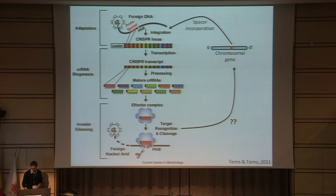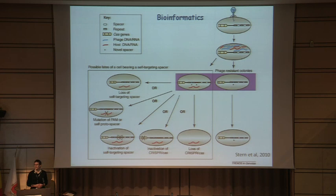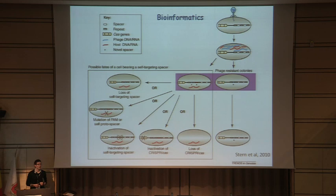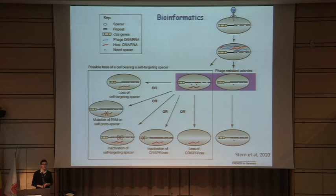Some very nice bioinformatic work has been done by a number of groups, particularly an excellent paper from Rotem Sorek's lab, where they analysed all cases of chromosomal targeting in bacteria. They found at least 100 cases of apparent chromosomal targeting, and when they looked at how this correlated with CRISPR-Cas function, they noticed many mutations found within the Cas machinery and within the CRISPR arrays themselves. This led to the hypothesis that chromosomal targeting could be a toxic event, and therefore mutations would be selected for that inactivate that function.